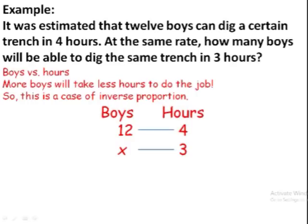Okay, these blue lines will tell you which number will be multiplied to which one. So, 3 is to be multiplied by x, and it will be equal to 12 multiplied by 4. This gives us, after solution, x equals 16 boys.